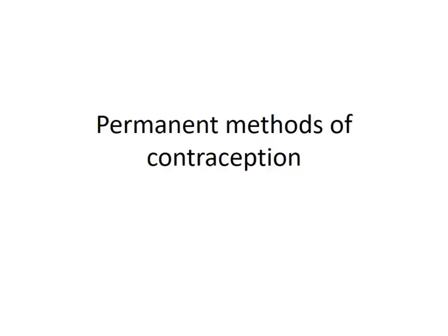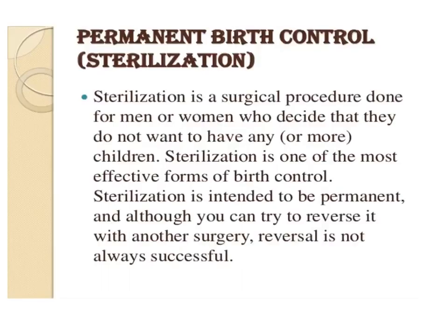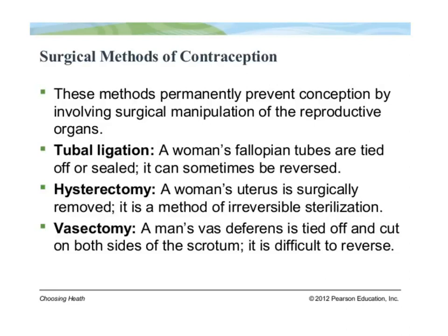Permanent methods of contraception are sterilization or surgical methods. These are usually permanent, though there are times when people want to reverse the sterilization, but the results are not very good. Surgical methods permanently prevent conception by surgical manipulation of the reproductive organs: tubal ligation — tying the fallopian tube; hysterectomy — removing the uterus; and vasectomy — tying the vas deferens.